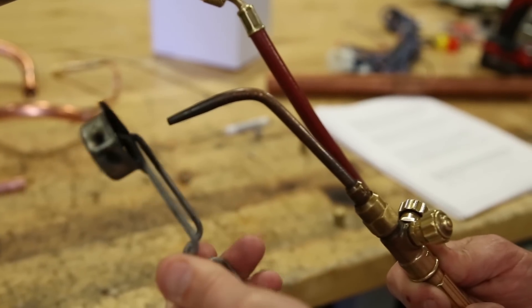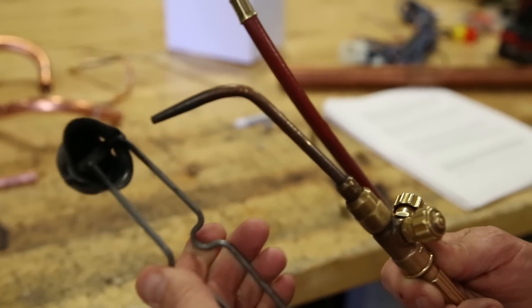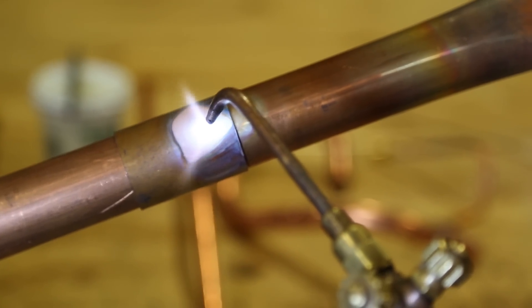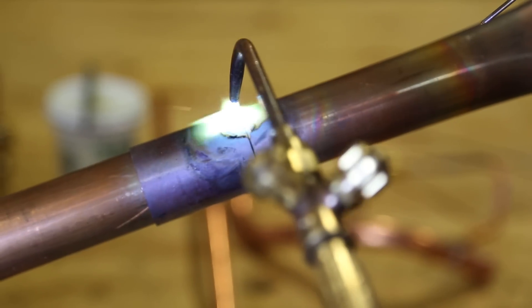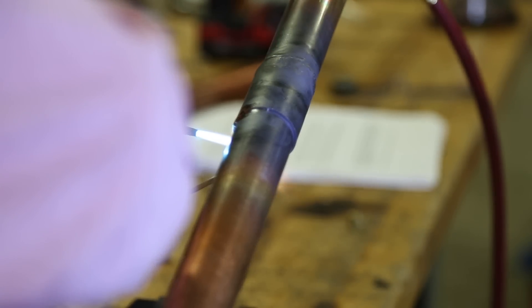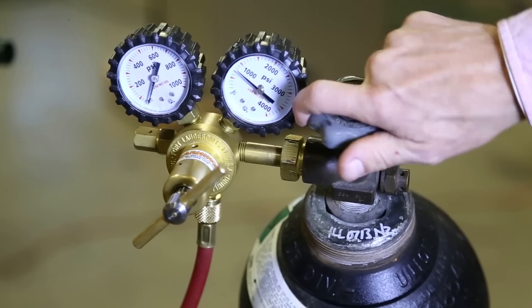In the day-to-day tasks of an HVAC service technician, there are certain tasks that are skipped or overlooked due to time constraints. Unfortunately, some extra steps are simply not deemed important. One of the most important tasks is the use of a nitrogen purge while brazing.